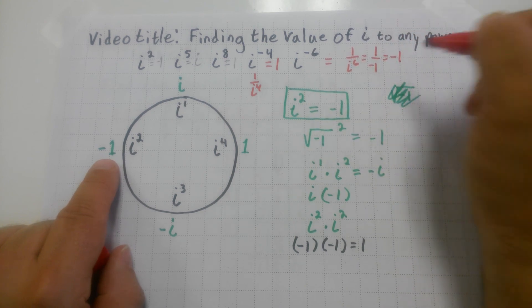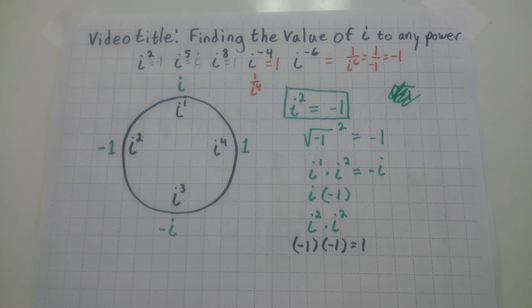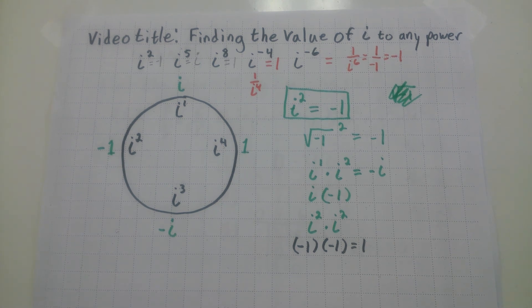How about i to the negative sixth? That can be rewritten as one over i to the sixth. Counting to the sixth position, i to the sixth is negative one. So this is going to be rewritten as one over negative one, which equals negative one. Pretty quick. Thank you.